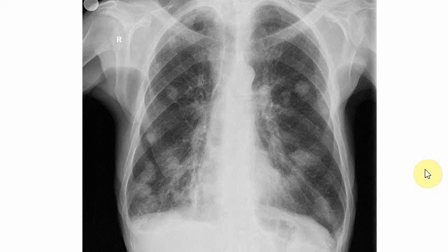So these few x-rays show some very common findings you can find on x-rays, besides obviously broken ribs, pneumothorax, fibrosis, and different types of pneumonias. These are the important common pathologies on x-rays. Thank you.